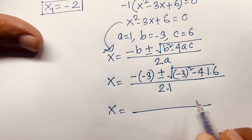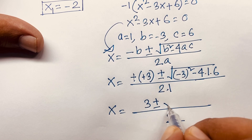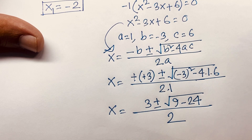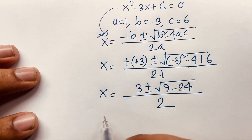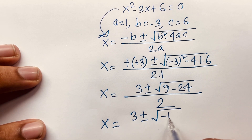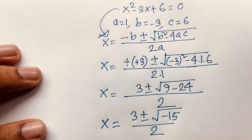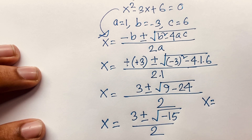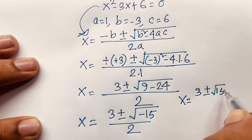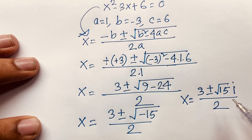Substituting: x equals 3 plus or minus square root of (−3) squared minus 4 times 1 times 6, over 2 times 1. That gives x equals 3 plus or minus square root of 9 minus 24, over 2, which equals 3 plus or minus square root of minus 15, over 2.